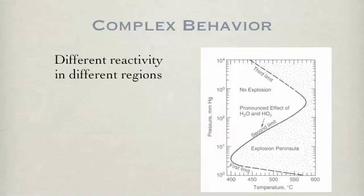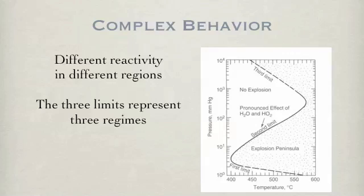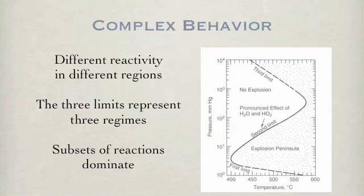Under different regimes, different reactions dominate. If the terminating reactions dominate, then ignition is inhibited. But if the branching reactions dominate, then ignition is promoted. This graph shows the different limits of the hydrogen ignition with respect to temperature and increasing pressure. Each regime represents a certain subset of reactions that are dominated.